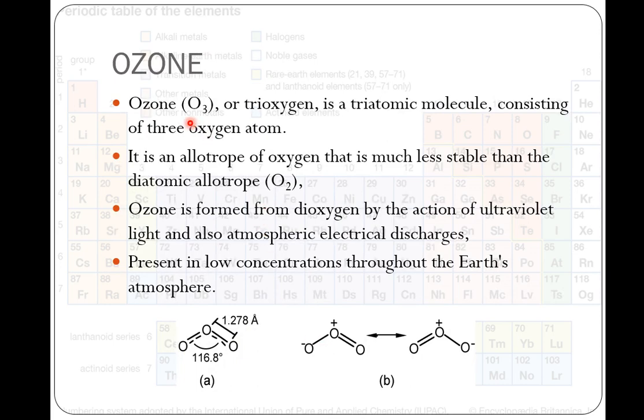Ozone, O3. It is a triatomic molecule consisting of three oxygen atoms. It is considered to be an allotrope of oxygen, but it is much less stable than O2. It is formed from dioxygen by the action of ultraviolet lights and also atmospheric electrical discharges. Present in low concentrations throughout the Earth's atmosphere. Here you can see the structure of ozone. It is a bent structure and it is a resonance hybrid of these two structures.